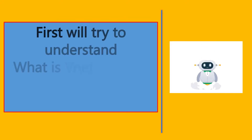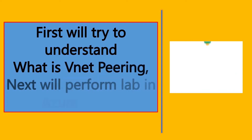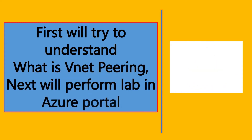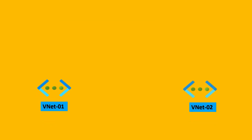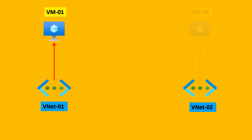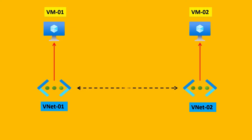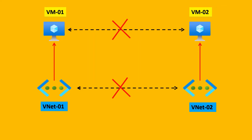First, we'll try to understand what VNet Peering is. Later, we'll also perform a lab in the Azure portal and understand how we can enable VNet Peering. The virtual networks in Azure are private networks created under subscriptions. We can create resources under virtual networks and use our applications. If I want to communicate between two virtual networks or between resources across virtual networks, by default it is not possible because there is no communication between two private networks, as they are isolated networks in Azure.